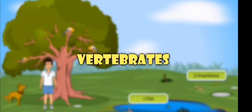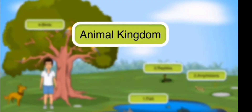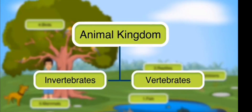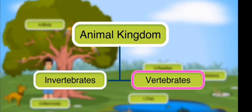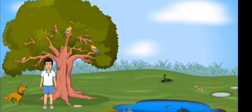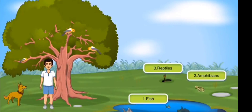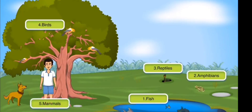Vertebrates: We know that the animal kingdom is divided into invertebrates and vertebrates. Let us learn about vertebrates. Vertebrates are divided into five groups: fish, amphibians, reptiles, birds, and mammals.